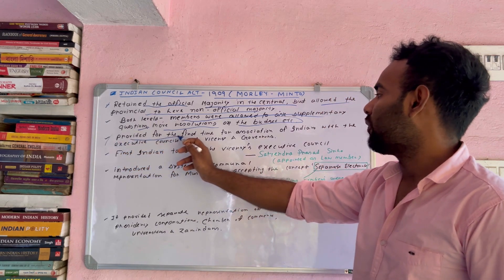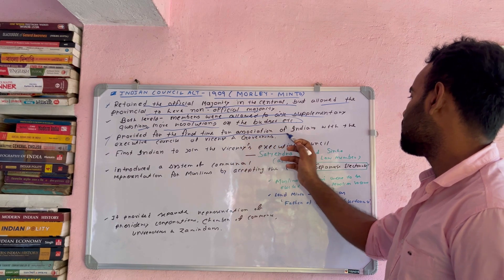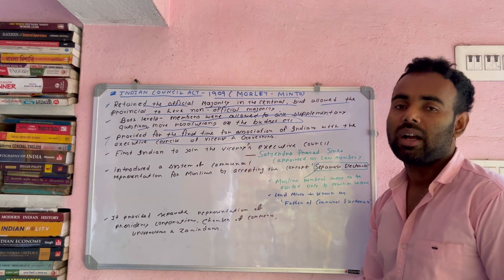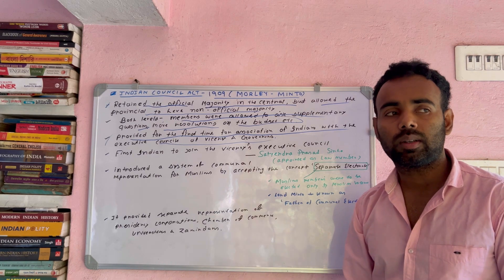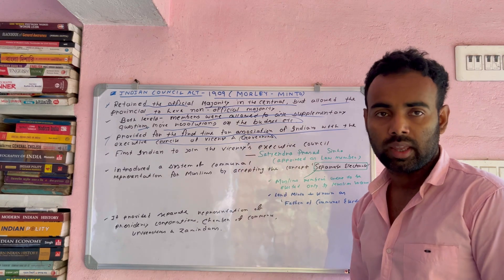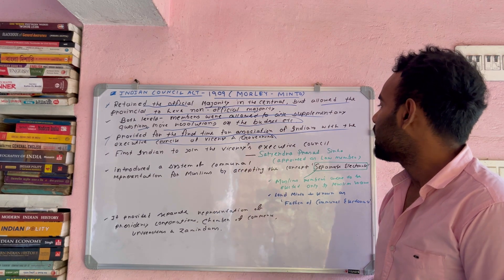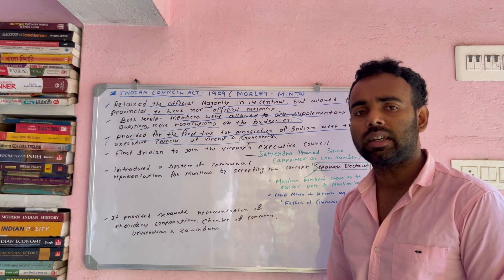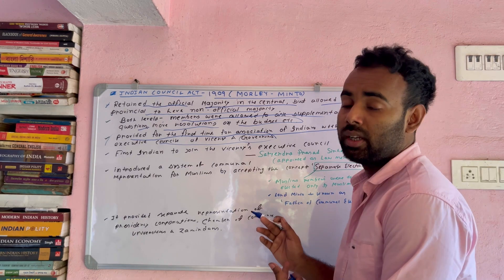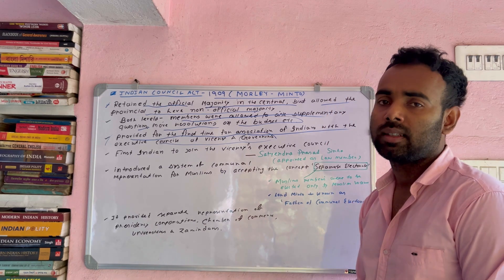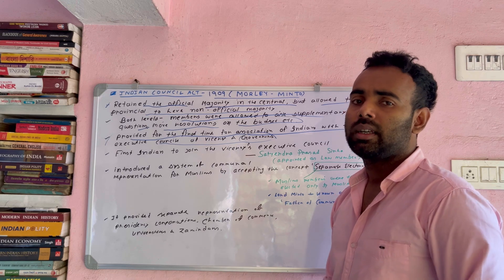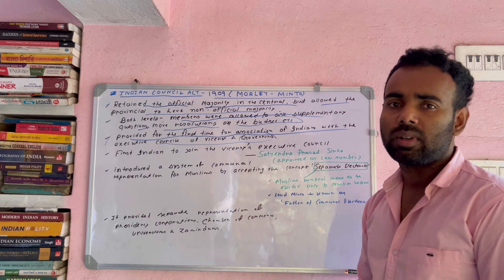The point is to provide for the first time the association of Indians with the Executive Council of the Viceroy and Governors. For the first time, the Executive Council of the Viceroy and Governors — the governor's council — was opened to Indian association. It was given to non-official members, and others were given positions. This is very important — the executive council.